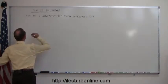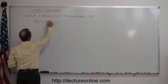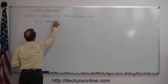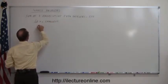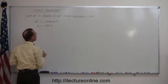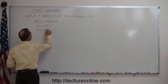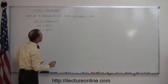So if we're going to let x equal the smallest, then x plus 2 must equal the next even integer and then x plus 4 must then equal the next even integer again.